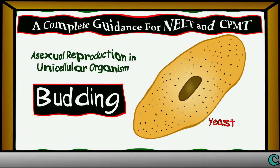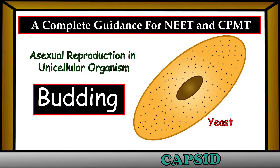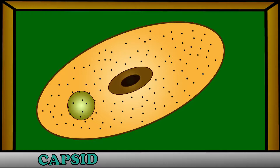Hello friends, let's visualize the budding, asexual reproduction in unicellular organisms like yeast and hydra. Let's look at how the budding takes place in yeast.